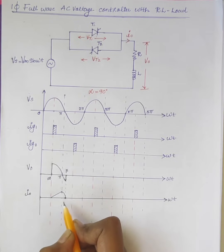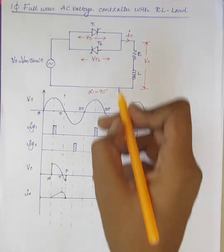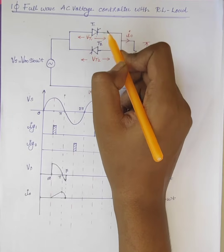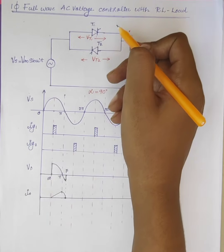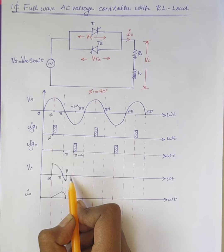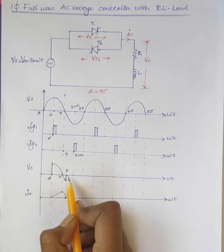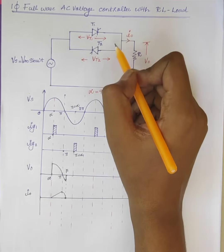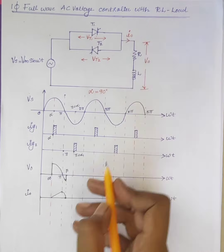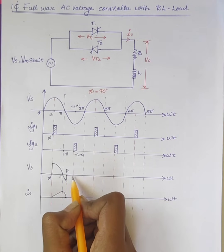At ωt equal to beta, I0 is 0 and thyristor T1 is turned off. From beta to π plus alpha, both T1 and T2 are in the off state. Therefore, the output voltage is 0.